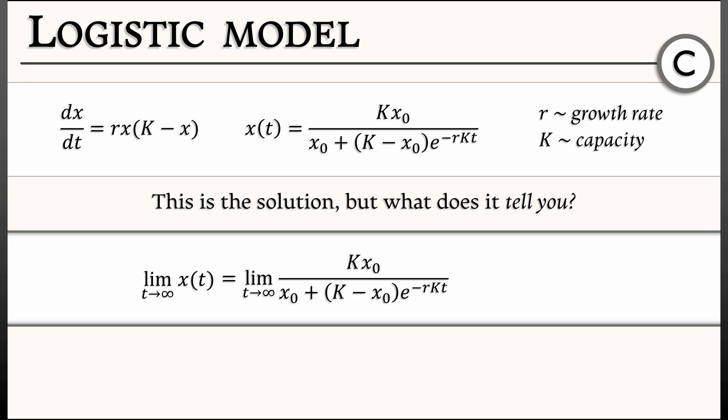The only place there's a t is down in the denominator. As t goes to infinity, since r and k are positive constants, that exponent is negative, so e to the minus rkt goes to 0. We converge to k*x0 divided by x0. The x0's cancel, and we get a final answer of k. That verifies what we saw graphically — solutions tend to this capacity, this carrying capacity, k.